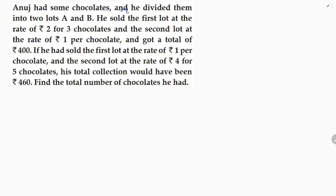Anuj had some chocolates and he divided them into two lots A and B. He sold the first lot at the rate of Rs. 2 for 3 chocolates and the second lot at the rate of Rs. 1 per chocolate and got a total of Rs. 400. If he had sold the first lot at Rs. 1 per chocolate and the second lot at Rs. 4 for 5 chocolates, his total collection would have been Rs. 460. Find the total number of chocolates he had.